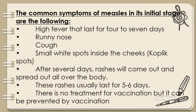The common symptoms of measles in its initial stage are: high fever that lasts for four to seven days, runny nose, cough, and small white spots inside the cheeks called Koplik spots. After several days, rashes come out and spread over the body, usually lasting five to six days. Measles can be prevented by vaccination.